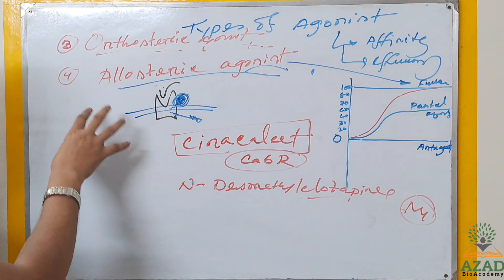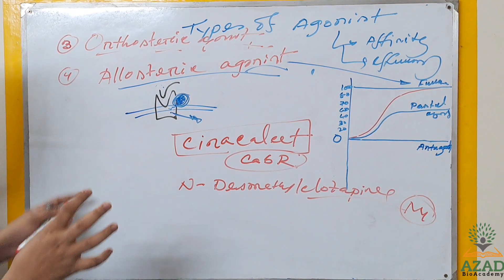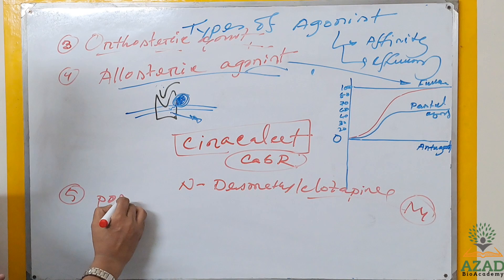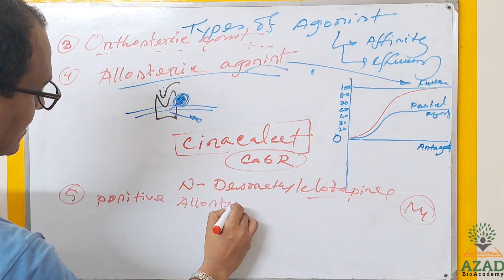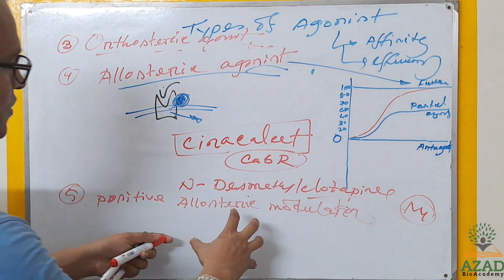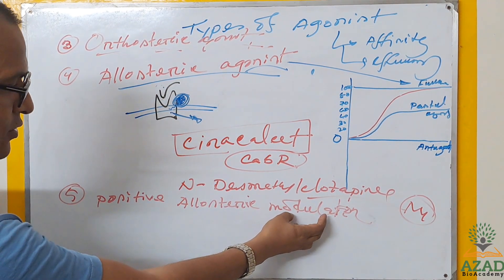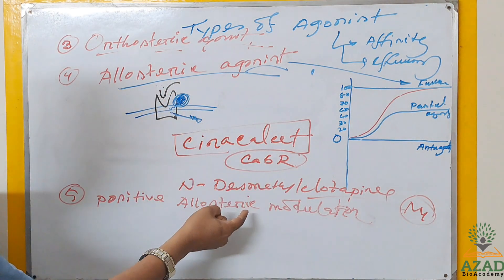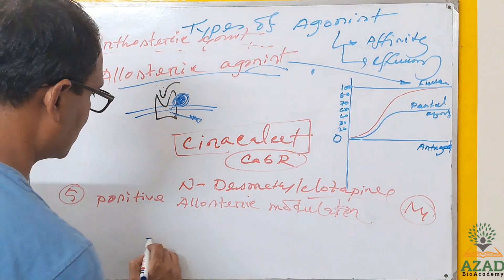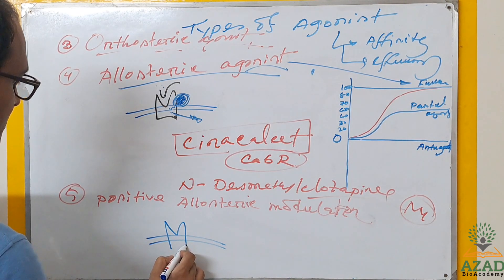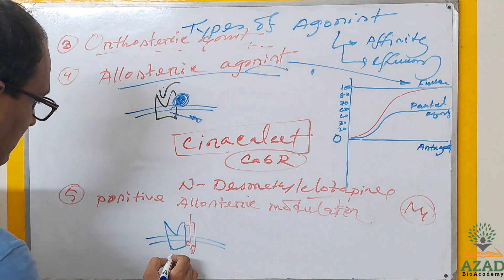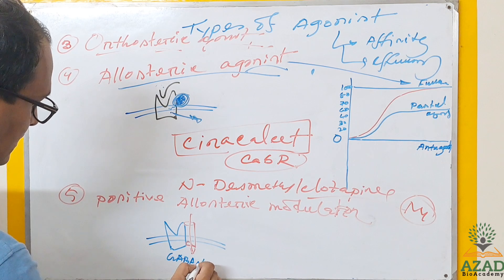Don't be confused with positive allosteric modulator (PAM). The PAM binds other than the main binding site and modulates the activity of the ligand — not directly changing the receptor conformation alone. For example, consider the GABA-A receptor connected to a chloride ion channel. GABA binds the GABA binding site and opens the chloride channel, causing hyperpolarization.